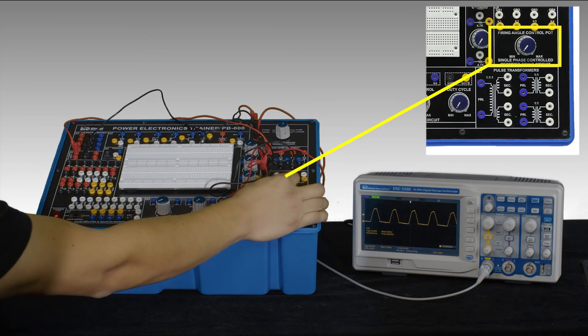Now the control allows you to choose when the SCR is triggered. And if you look at the scope, you'll see it's triggering it at 90 degrees here.